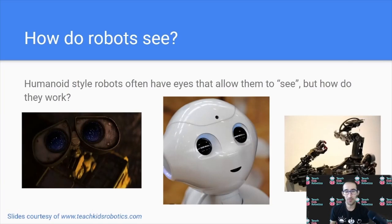Humanoid style robots often have eyes that allow them to see, but how do they work? These robots often have two lens-like objects, but how do they work really, knowing what's in the environment?